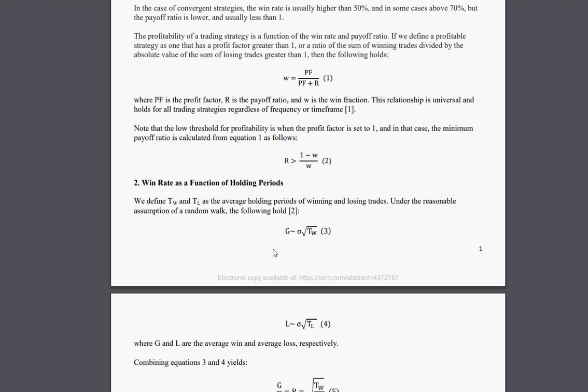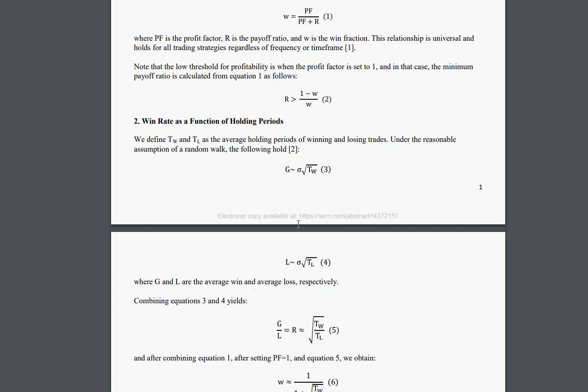Now let's go to the next step. If we define TW and TL as the average holding periods for winning and losing trades, then under the reasonable assumption of a random walk, as in the reference I will show you later,